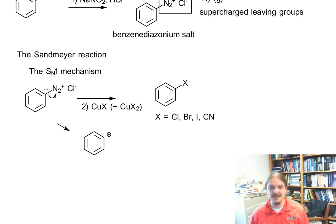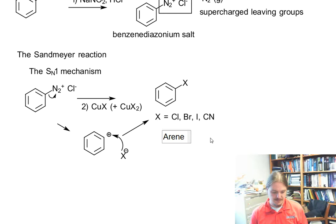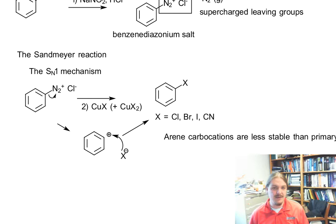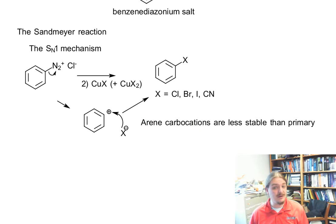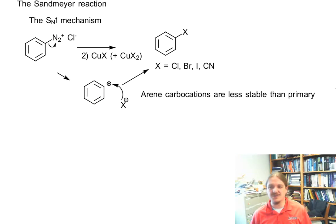In the SN1 mechanism, the N2 leaving group leaves, we get a carbocation, and then our nucleophile comes in and does its business forming the new carbon-nucleophile bond. One reason why the SN1 mechanism might not be the best idea here is that arene carbocations are less stable than primary carbocations, and in the aqueous-type solutions where these reactions occur, copper(I) salts don't dissociate to the degree that copper(II) salts do. So they've got two strikes against the SN1.